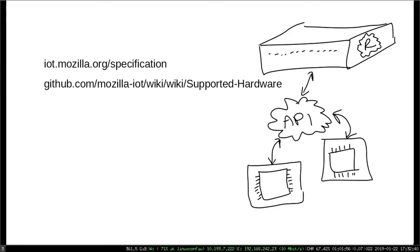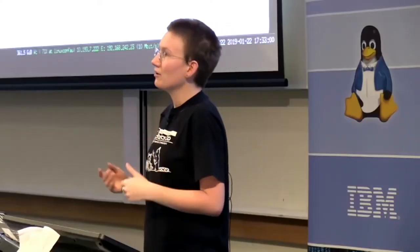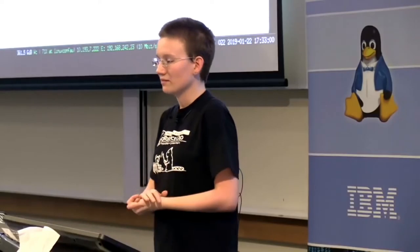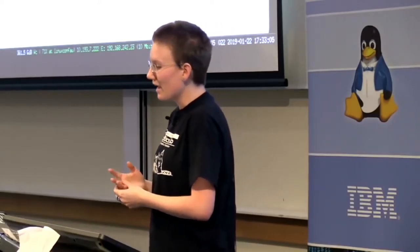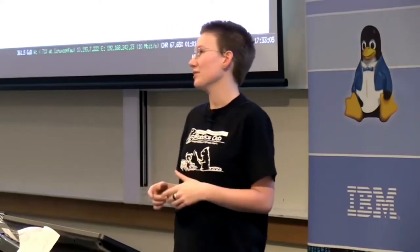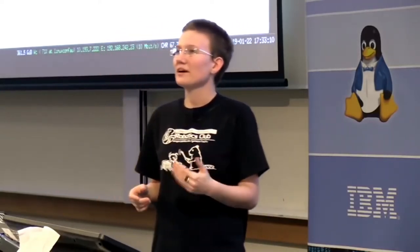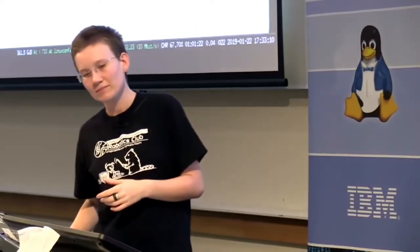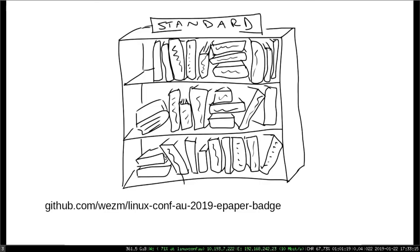The Mozilla Things project has a Rust example where you can write the server in Rust. Their example shows how to use the web-thing crate to talk to a dimmable light bulb and a humidity sensor that expose the Web Thing API. You can talk to anything that talks that API, which you can find in the wiki list of supported hardware. If you're interested in learning more, I'd recommend Kathy Jory's workshop tomorrow in room A3 from 3:50 to 5:30.